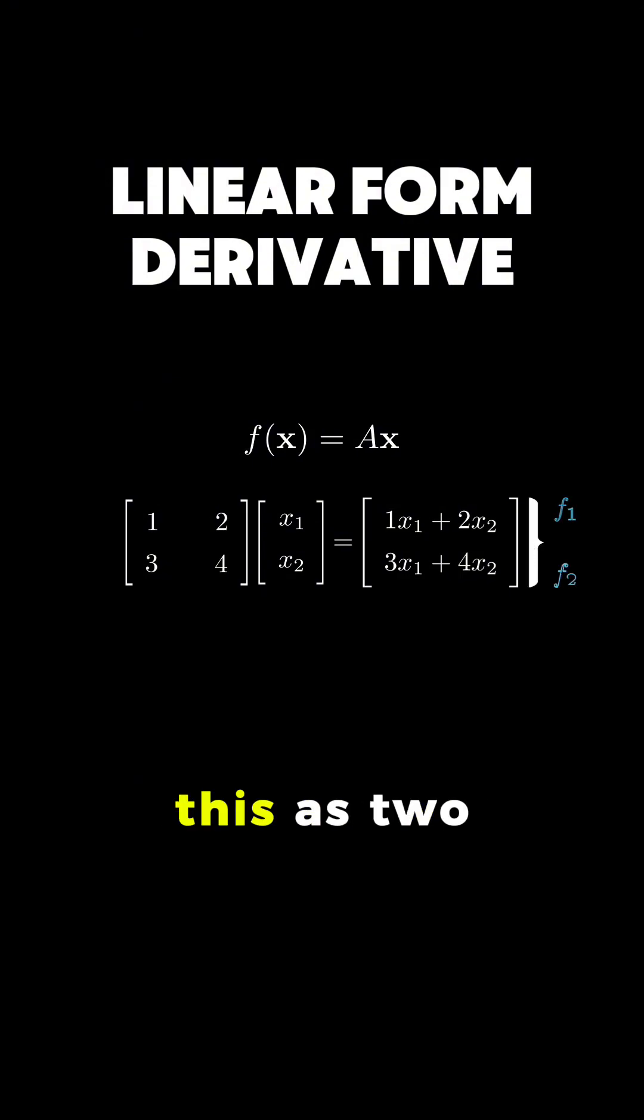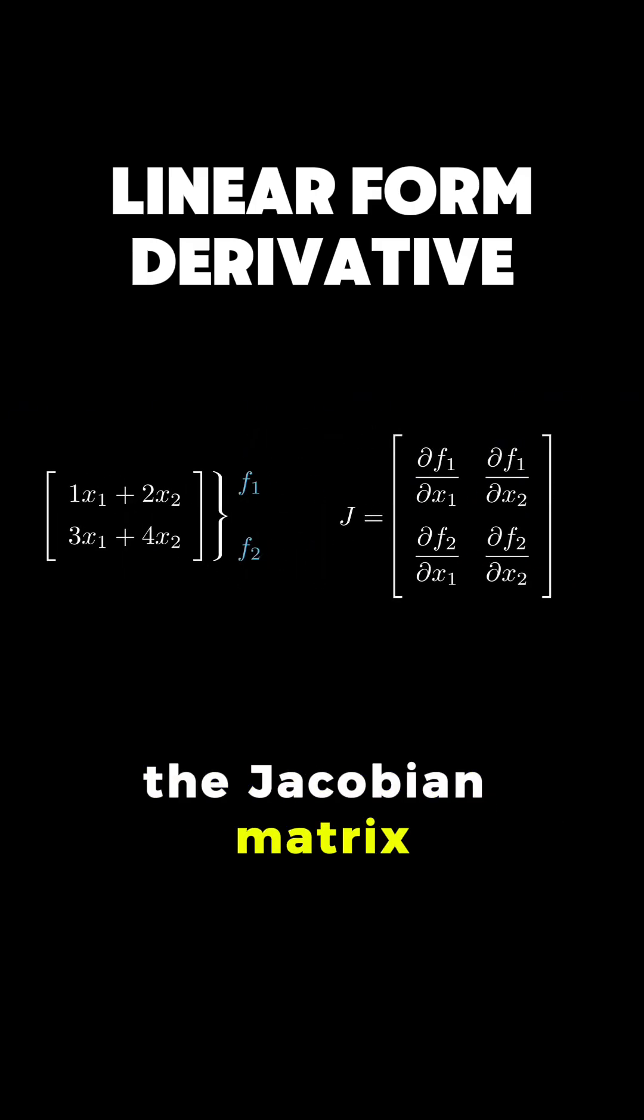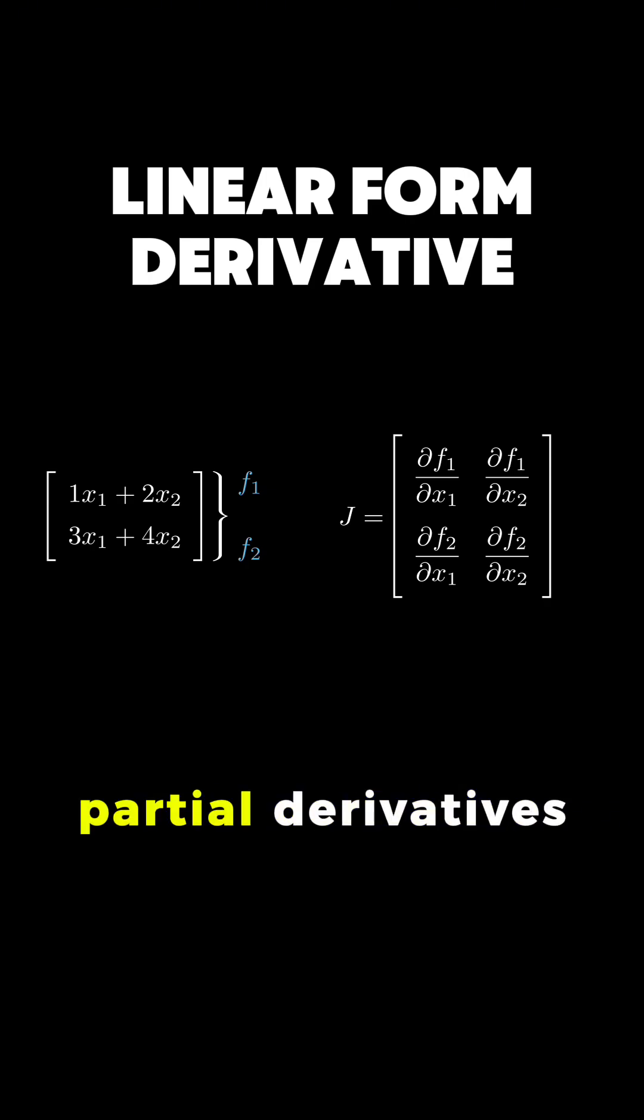We can view this as two separate functions, F1 and F2. The derivative of this vector-valued function is defined by the Jacobian matrix, which contains all partial derivatives.